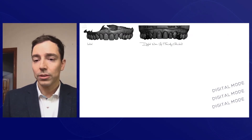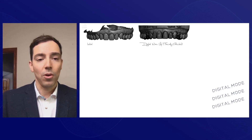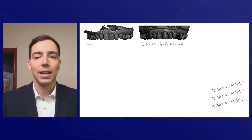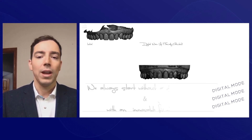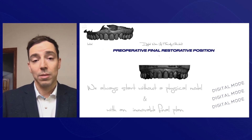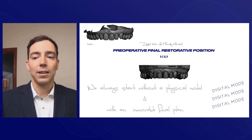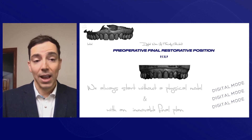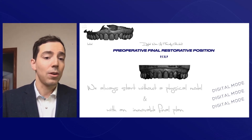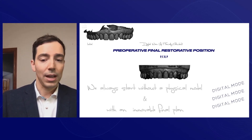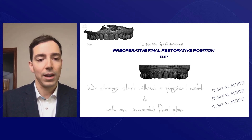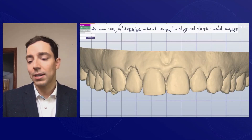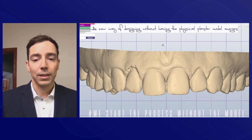If we start with digital mode, you can see that we don't have a model at the beginning — we have an STL. We design on top of this STL, and here we have what we call the PFRP: pre-operative final restorative position. We always start with a real plan at the beginning of our digital restorations, and this is an immovable final plan. That's the different way — we start without a physical model, as you can see here.